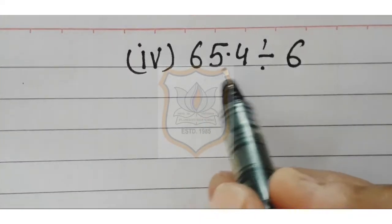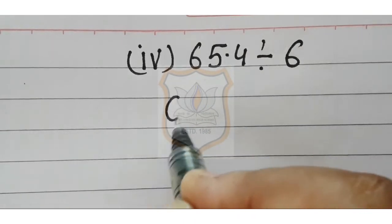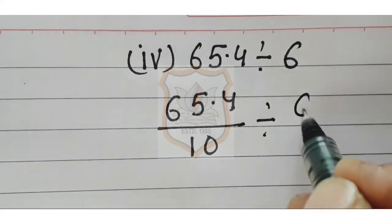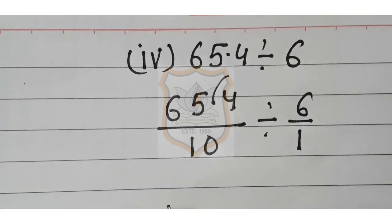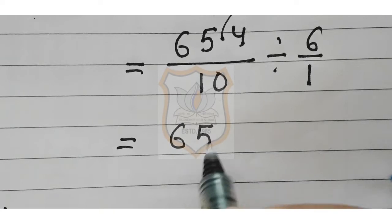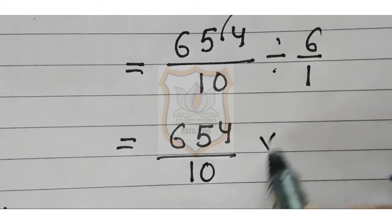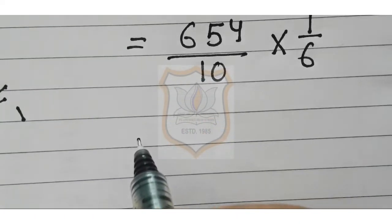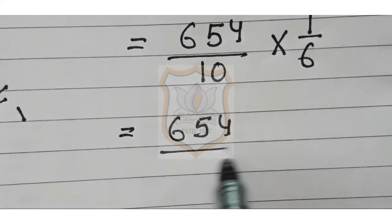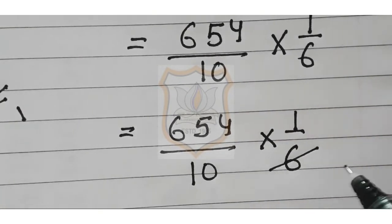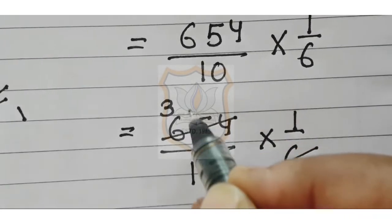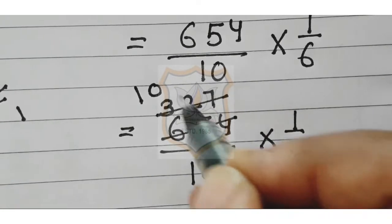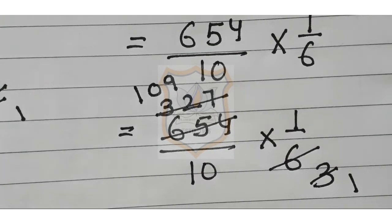Now let's solve part 4: 65.4 divided by 6. First we remove the decimal. 65.4 upon 10, because there is 1 digit after the decimal. Divided by 6 upon 1. That equals 654 upon 10, multiplied by 1 upon 6. Computing: 3 twos are 6, 3 twos are 6, 2 twos are 4, 2 sevens are 14, then 3 ones are 3, 3 ones are 3, 3 nines are 27. After cancellation, we get 109 upon 10.